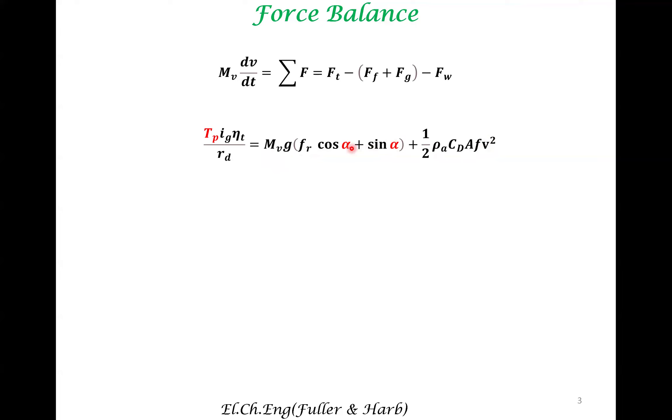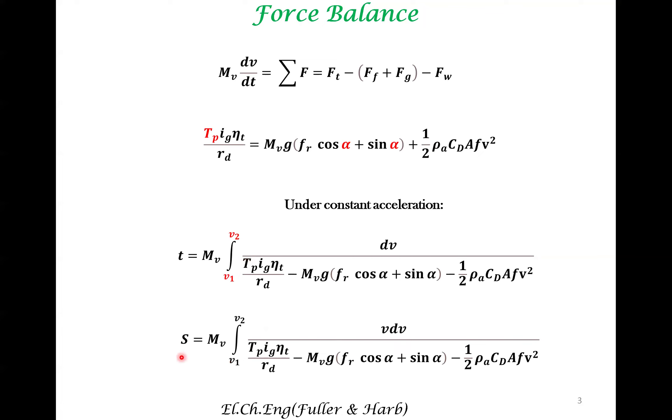When there is constant acceleration, we can integrate this equation to get the time taken to move from velocity v1 to v2 under constant acceleration. This is obtained by simple integration. Again, by defining based on the definition of velocity, we can also get the distance traveled within this time slot when the velocity goes from v1 to v2. This is just high school physics on how to get this time and distance.